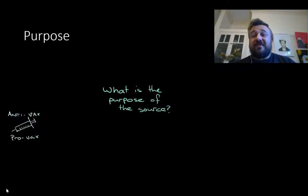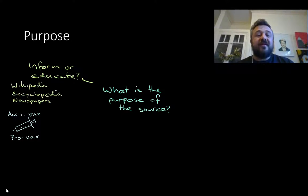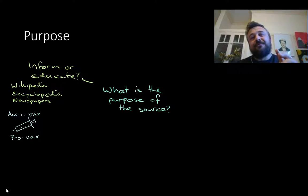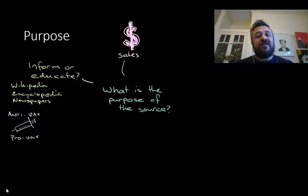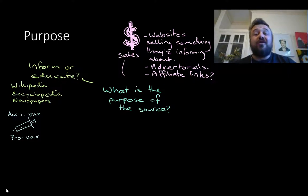We're talking about purposes and stating positions. My position on this one is obviously pro-vaccines — that's the way the world works. So what's the purpose? Is it to inform or educate? That is one potential purpose. Wikipedia, encyclopedias, newspapers — they tend to be to inform or educate. But could this article be written to boost up sales? You often see websites set up to look like they're informing you about something, but the whole thing is to inform you about a substance that they sell right there.